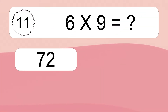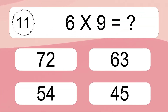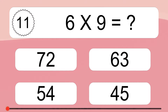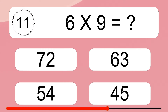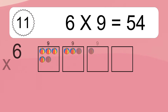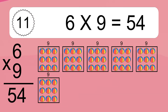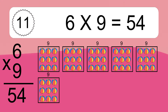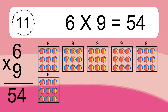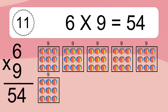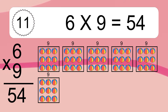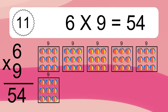Six times nine equals what? Six times nine equals 54. We have six boxes and each box has nine colorful balls inside. If you count all the balls in all the boxes together, you will have six times nine balls. This equals 54 balls.